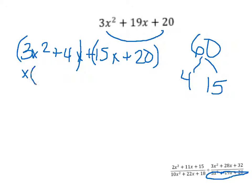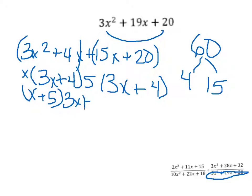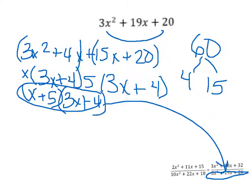Factor out the greatest common factor from each group: just an x from the first group gives (3x + 4), and then you can factor out a 5 from the second group, which also gives (3x + 4). So you group those back together to get (x + 5)(3x + 4). This takes place of the second denominator.